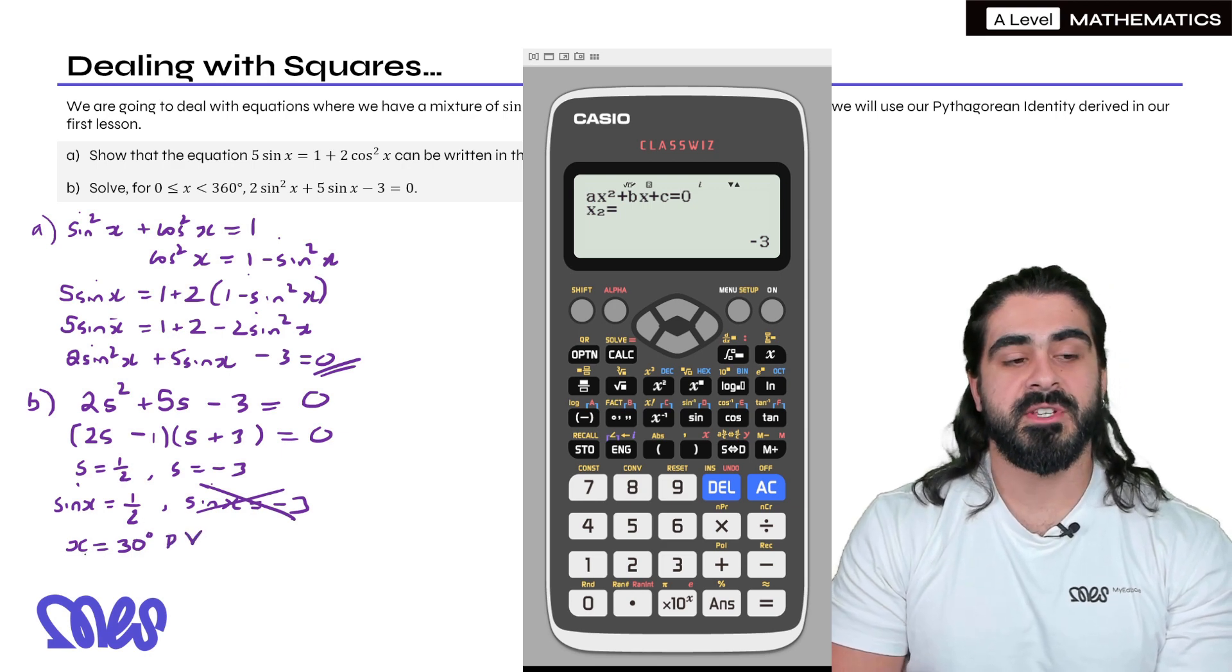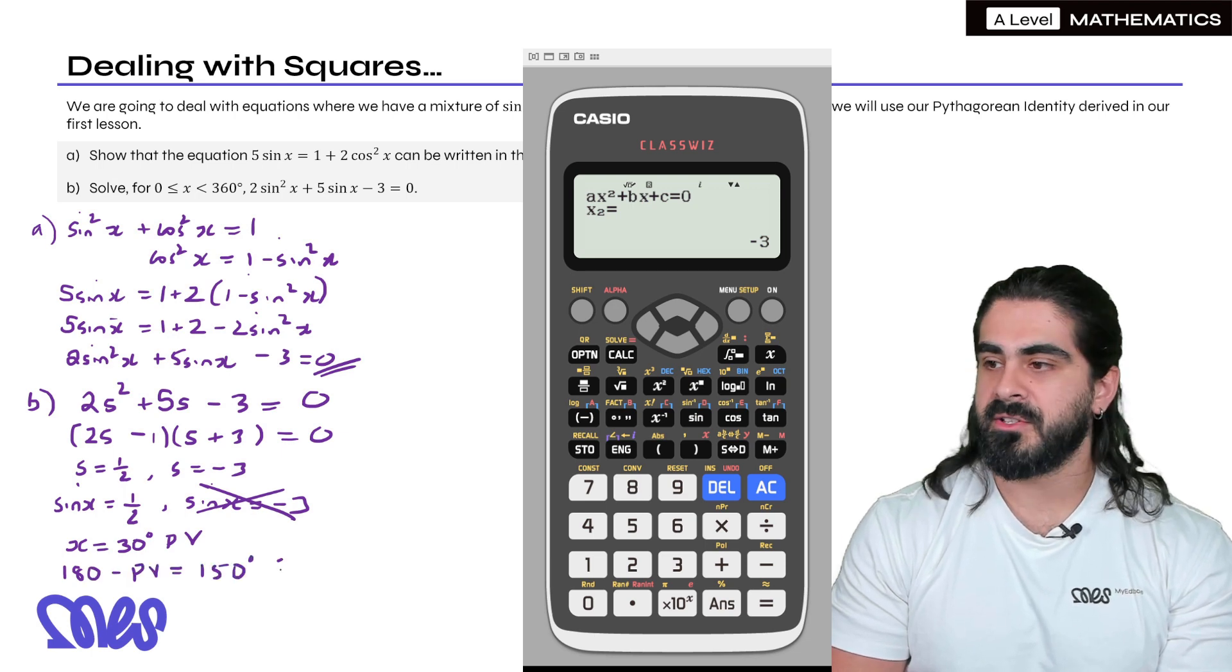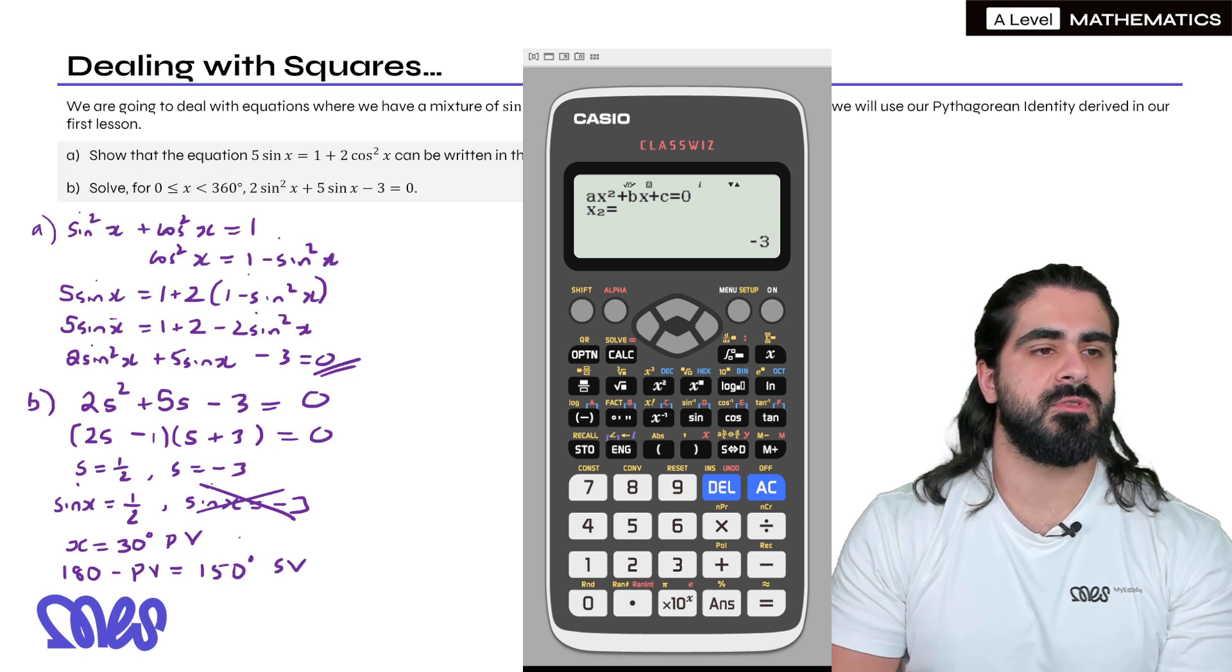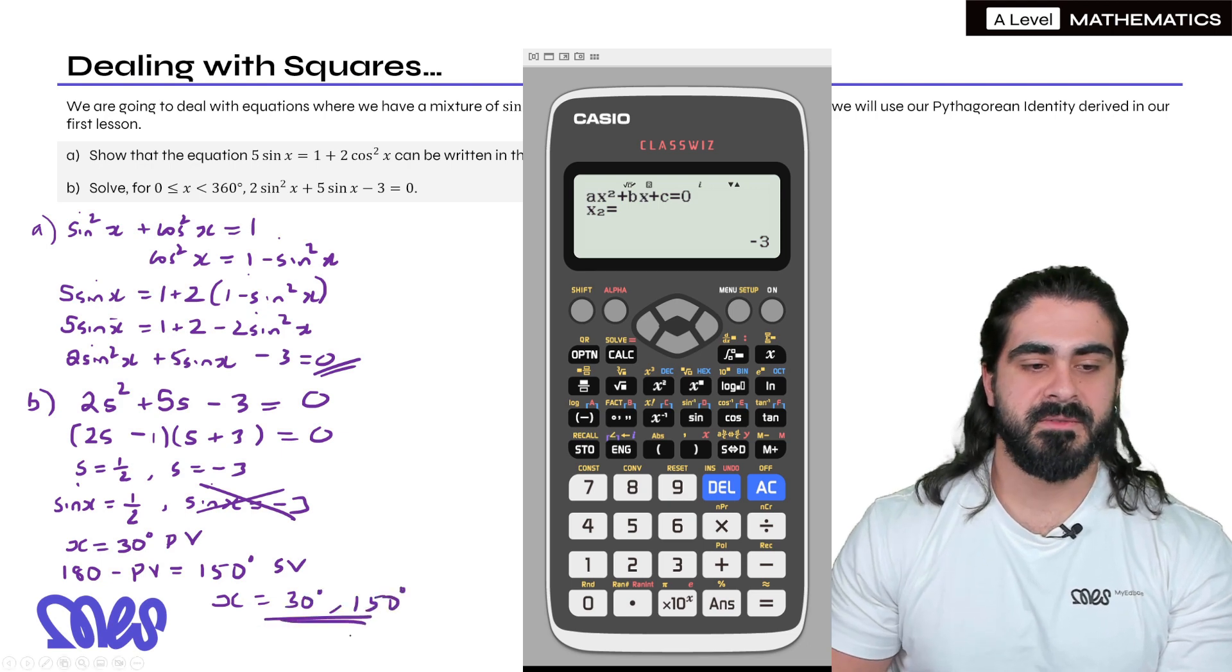Then how do you work out the secondary value for sine? We do 180 minus. So 180 minus the primary value is 150 degrees. Then we add or minus 360, but the range is between 0 and 360, so we can't do that. Our only two solutions are 30 and 150 degrees.